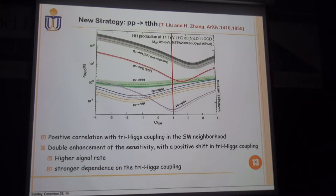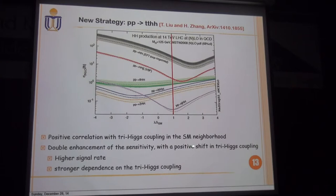Different from PP→HH, the production of PP→ttHH has a positive correlation with the tri-Higgs coupling in the standard model neighborhood. This led to a double enhancement of the sensitivity with a positive shift in the tri-Higgs coupling. First, it leads to a higher signal rate. Second, the production cross-section of this channel has a stronger dependence on the tri-Higgs coupling in this region.